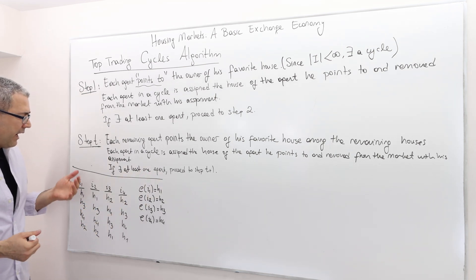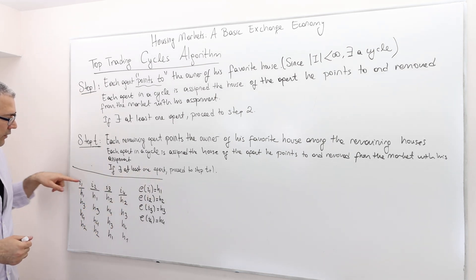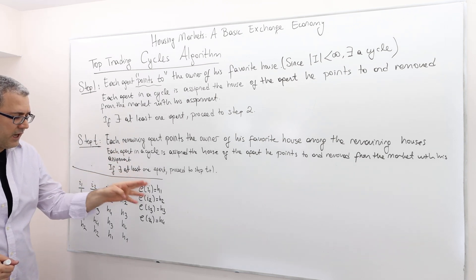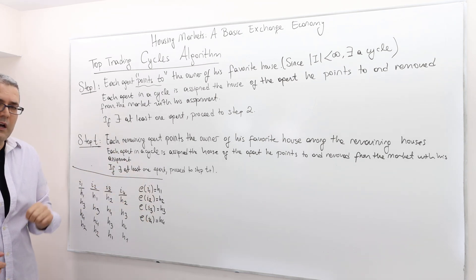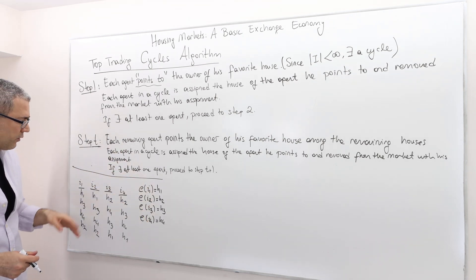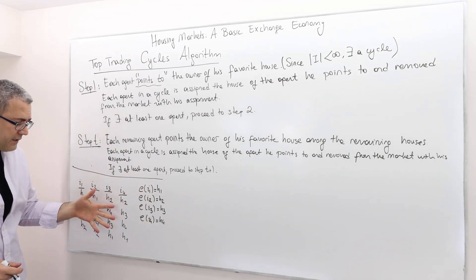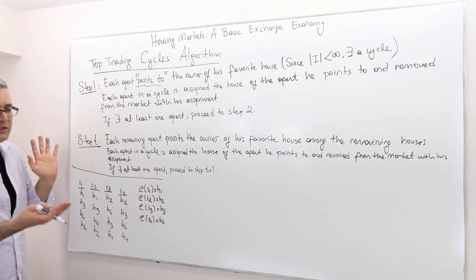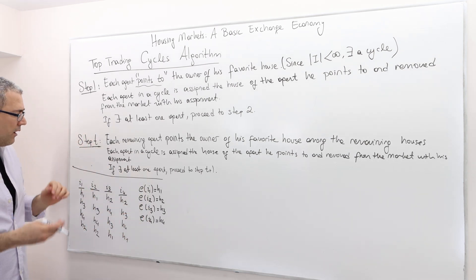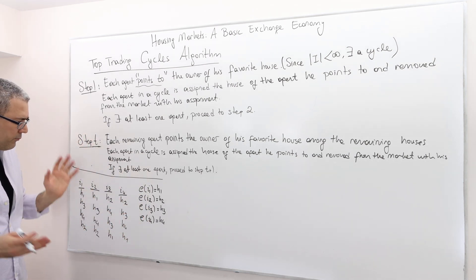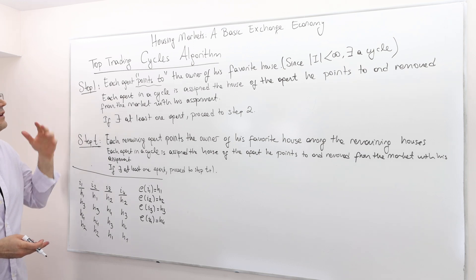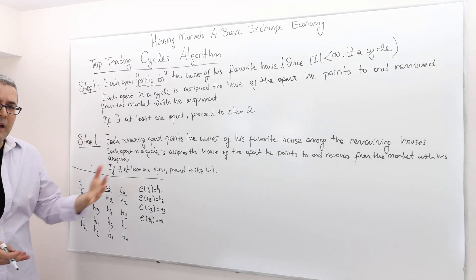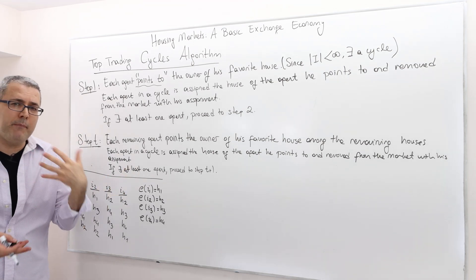Here's an example. I have a set of four agents, a set of houses — house one, house two, house three, house four — along with preferences and an initial endowment. This is a housing market. How do we apply the top trading cycle algorithm and come up with a matching?